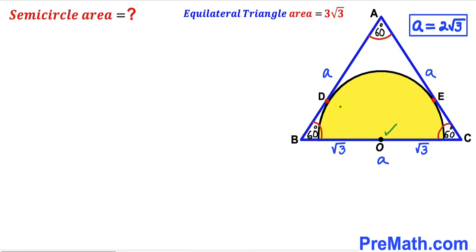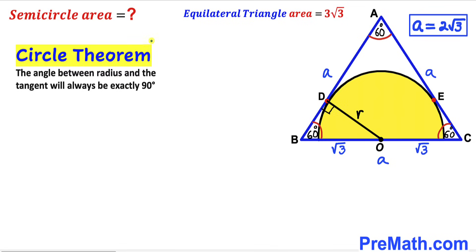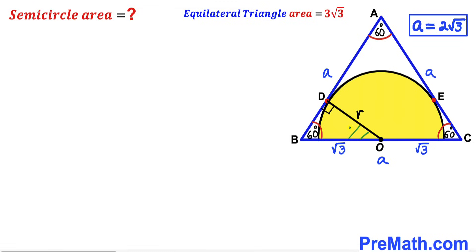Now I am going to connect center O with the point of tangency D. We can observe that OD is the radius of this semicircle, so I will label it lowercase r. Recalling the circle theorem: the angle between a radius and a tangent line is always 90 degrees. So this angle is 90 degrees. Focusing on right triangle OBD, we know one angle is 60 degrees and another is 90 degrees, so the remaining angle must be 30 degrees.